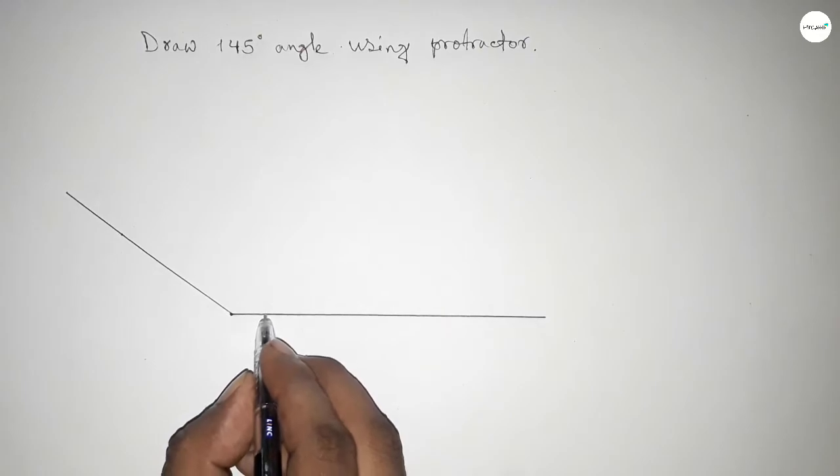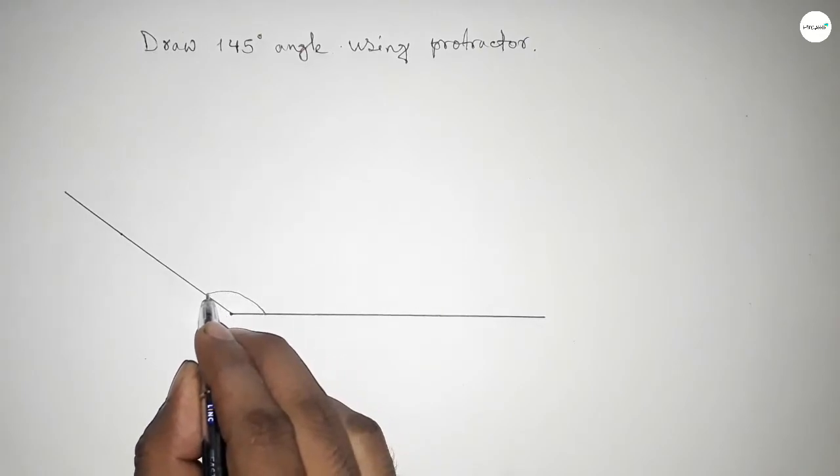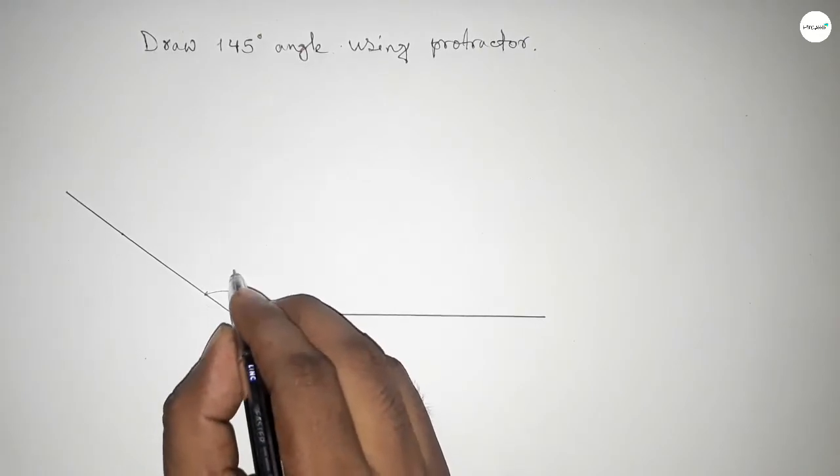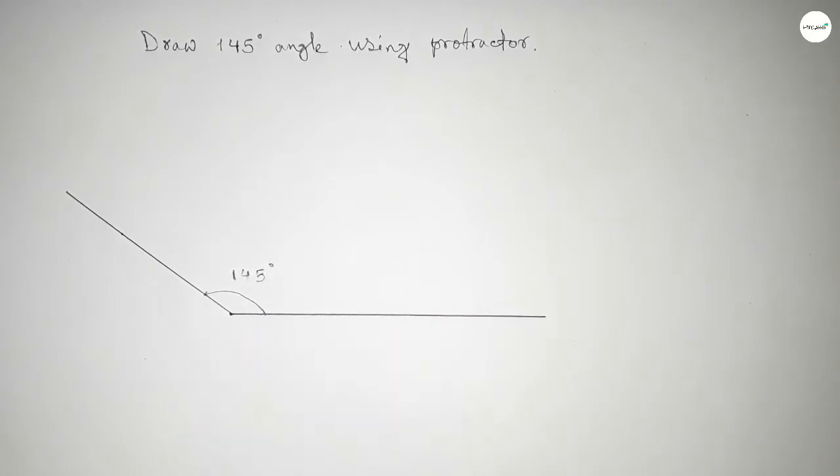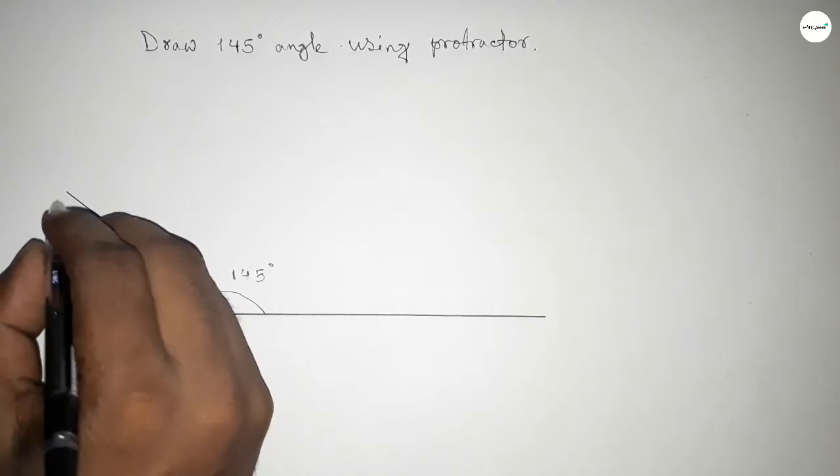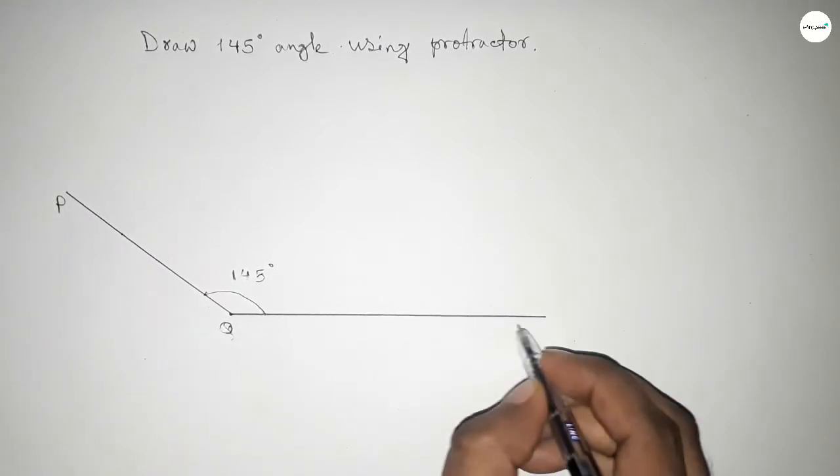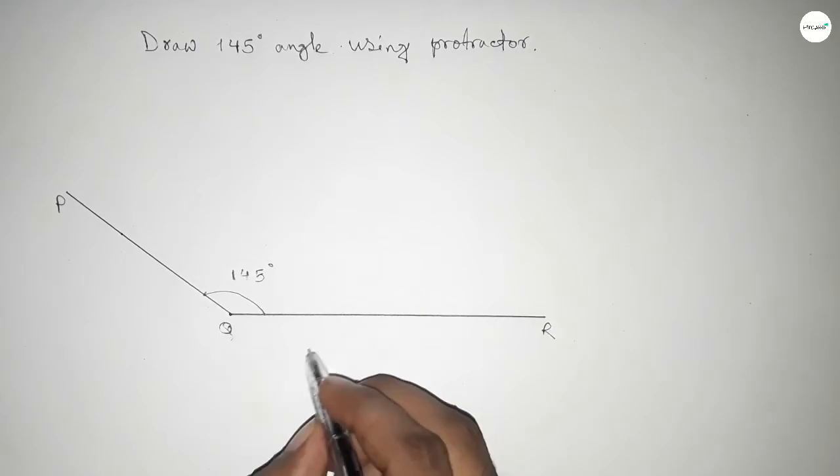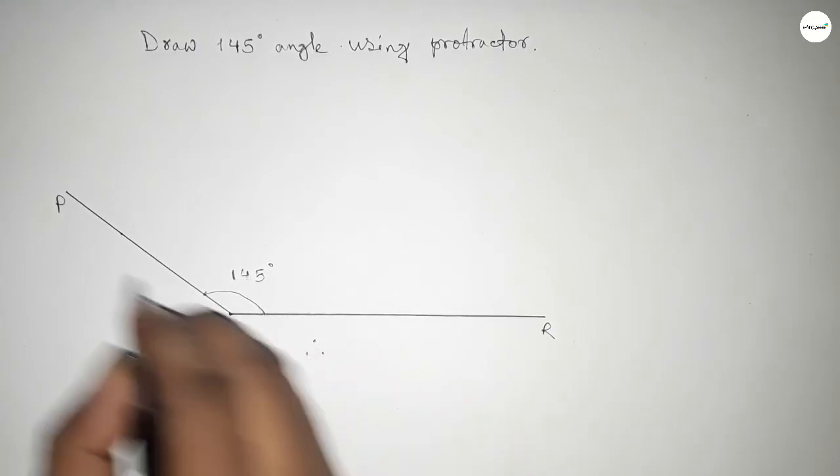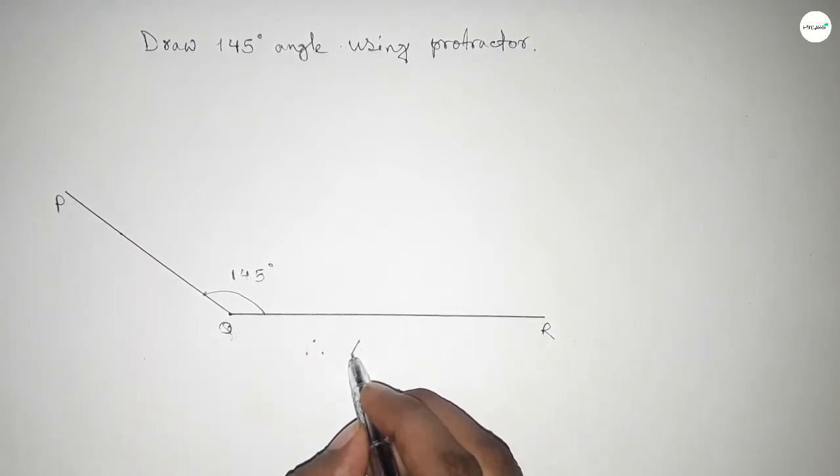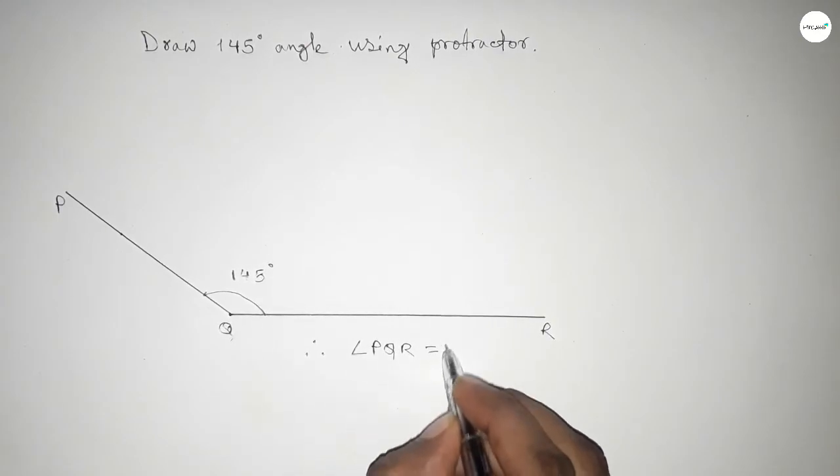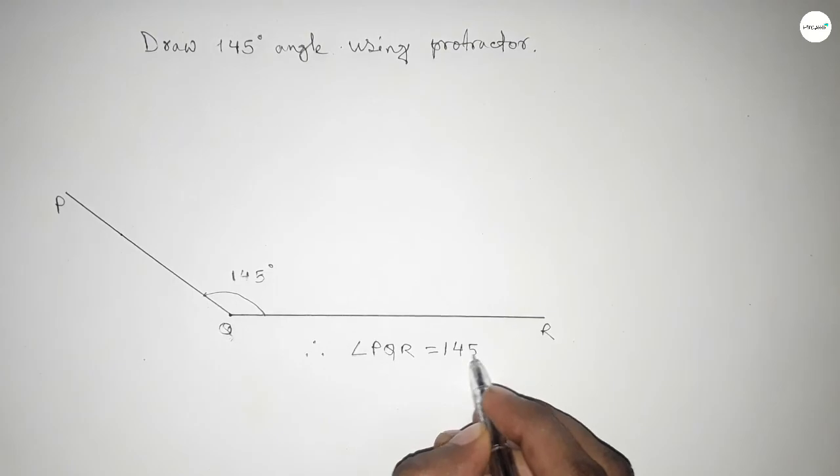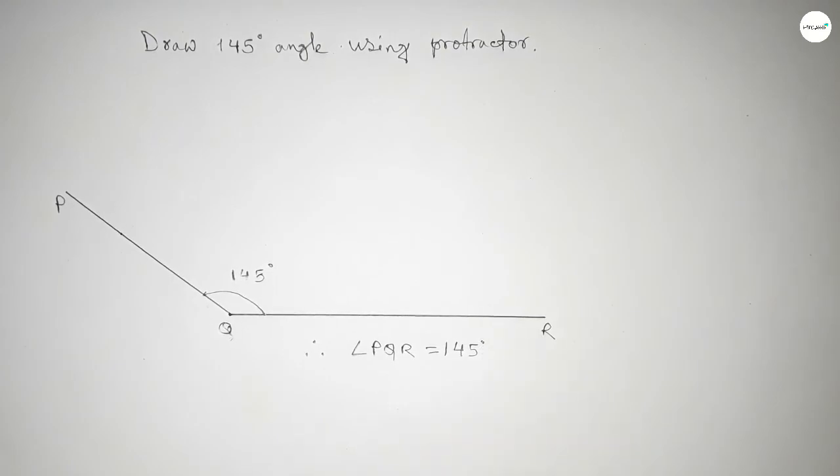So this is the 145-degree angle, and this is P, Q, and R. Therefore angle PQR - we can write angle PQR equals 145 degrees. That's all, thanks for watching.